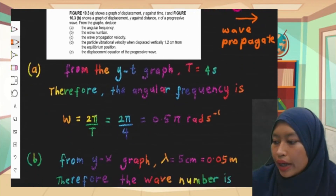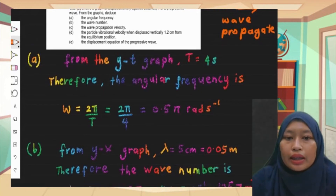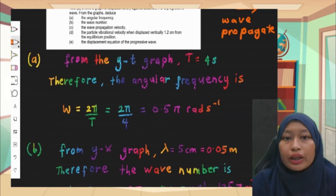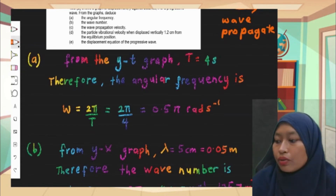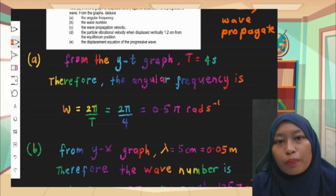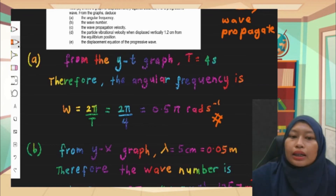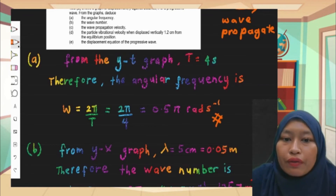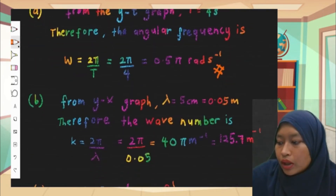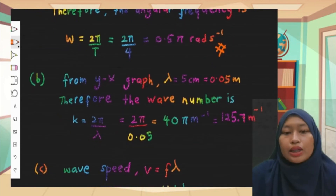For part a, from the y-t graph we can find the period, which is 4 seconds. The question asks for angular frequency ω. Using ω = 2π/T, we get ω = 2π/4 = 0.5π rad/s. Don't forget the unit: radians per second.